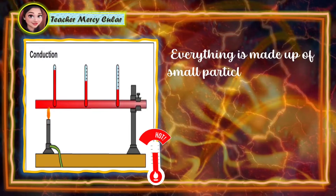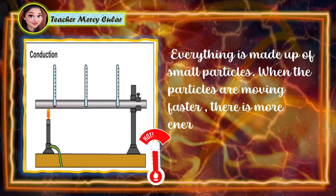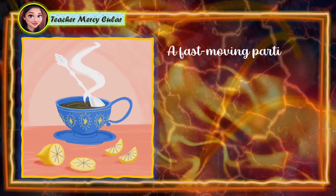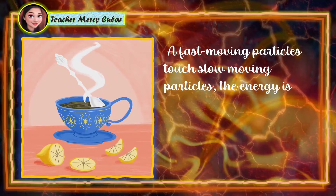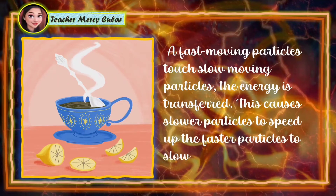Everything is made up of small particles. When the particles are moving faster, there is more energy and the temperature is higher. As fast-moving particles touch slow-moving particles, the energy is transferred. This causes slower particles to speed up and the faster particles to slow down.